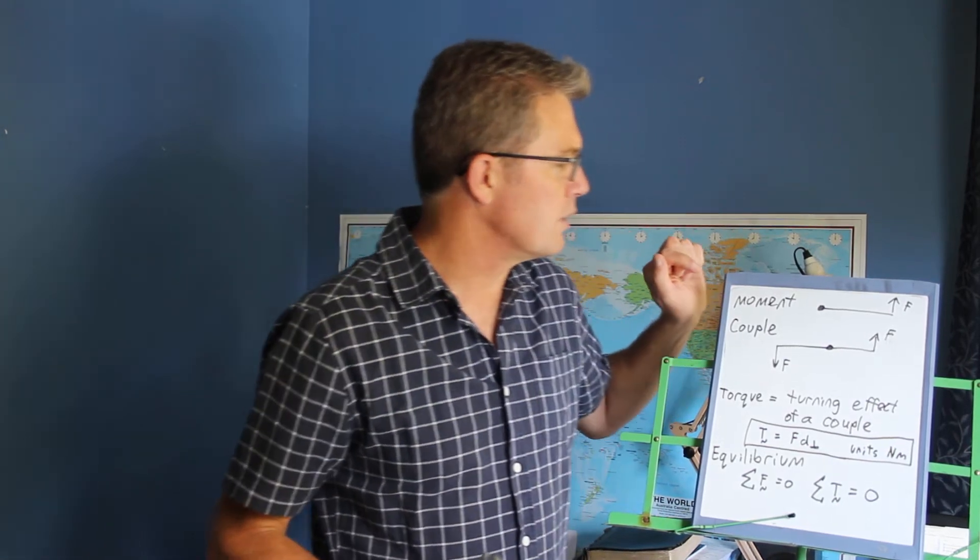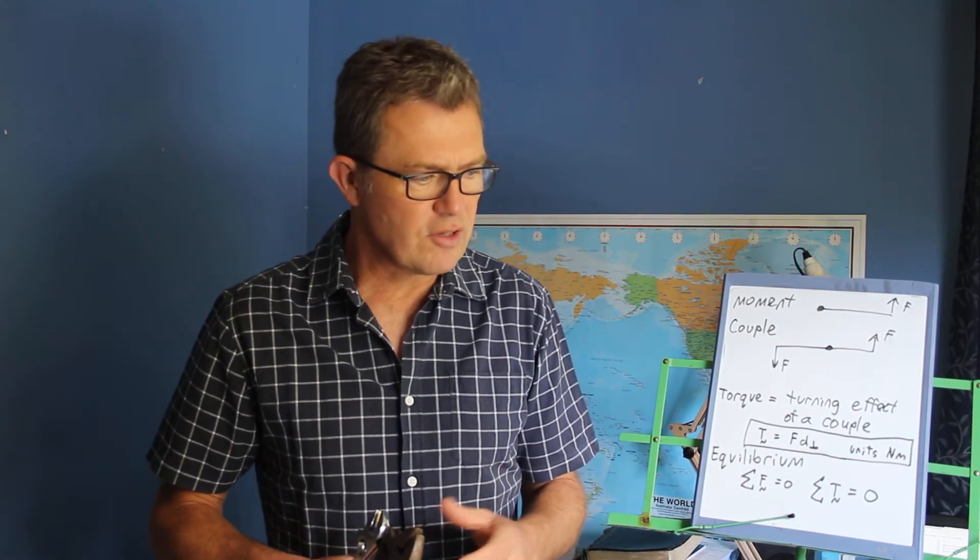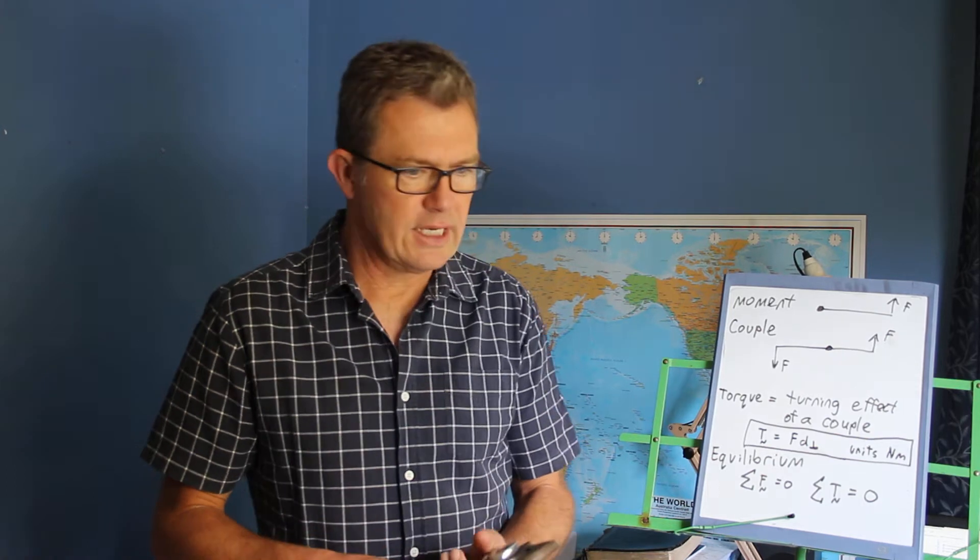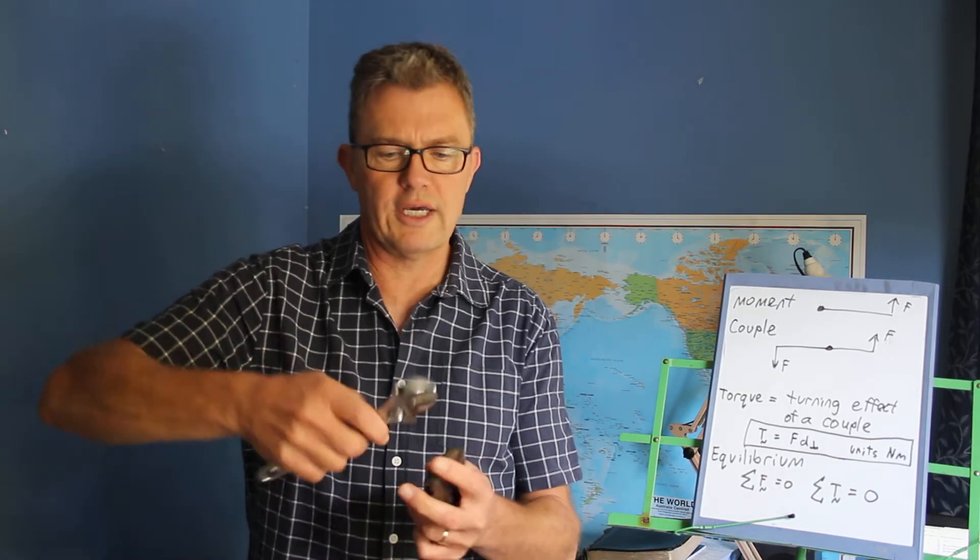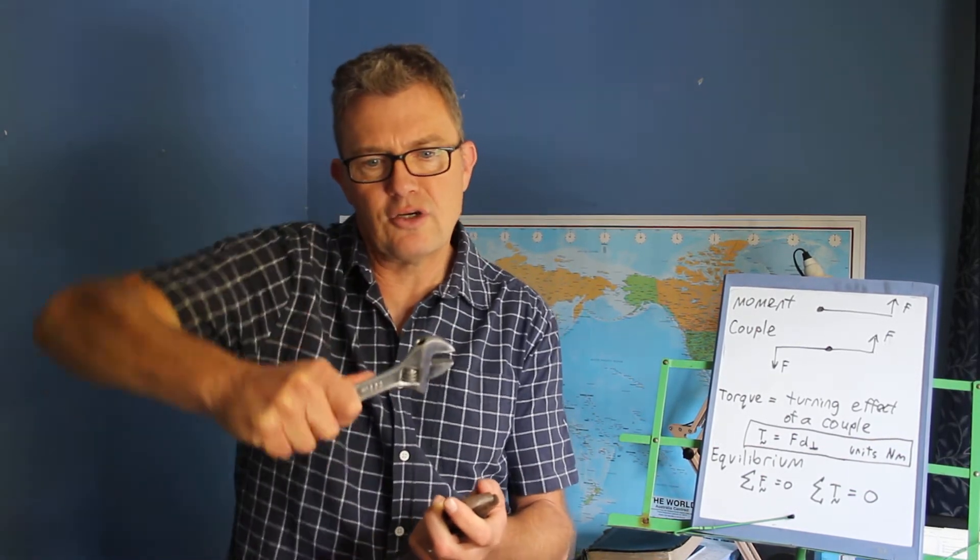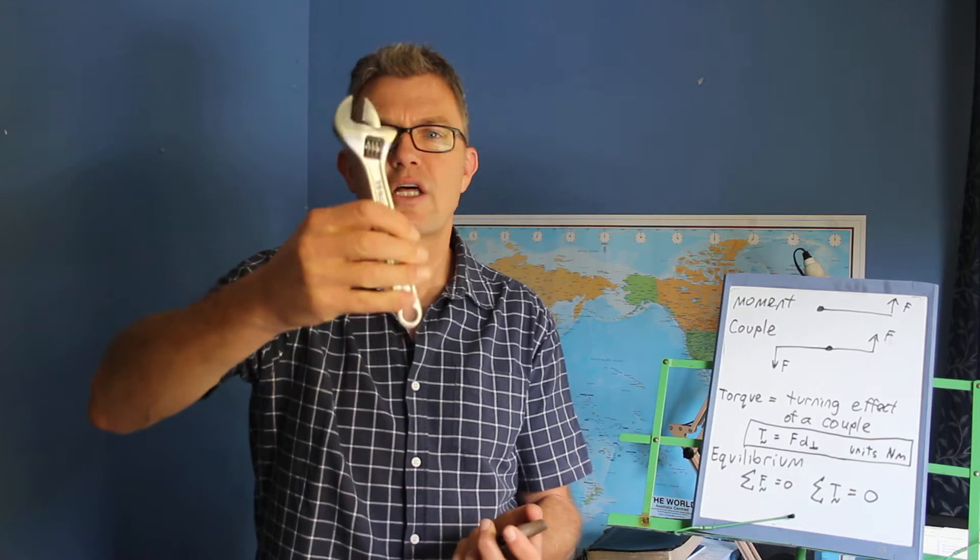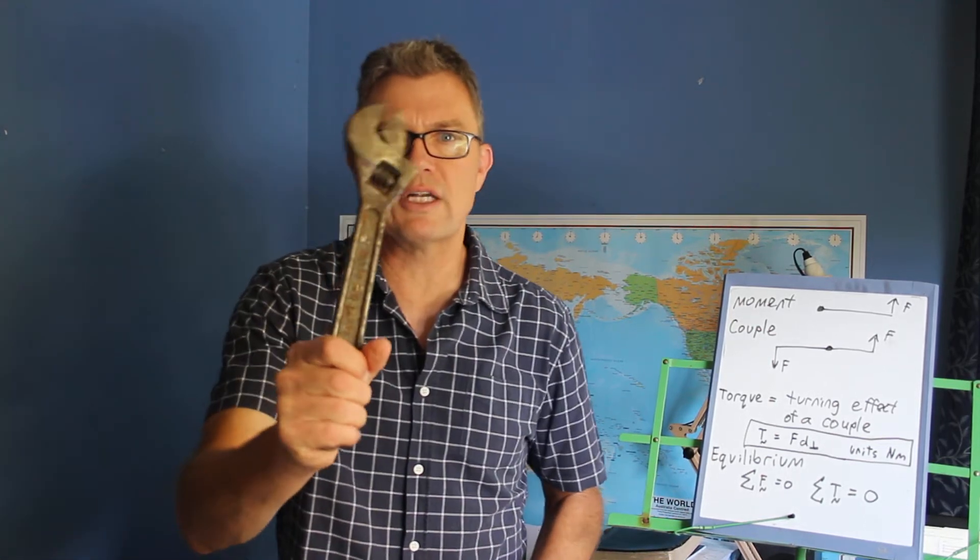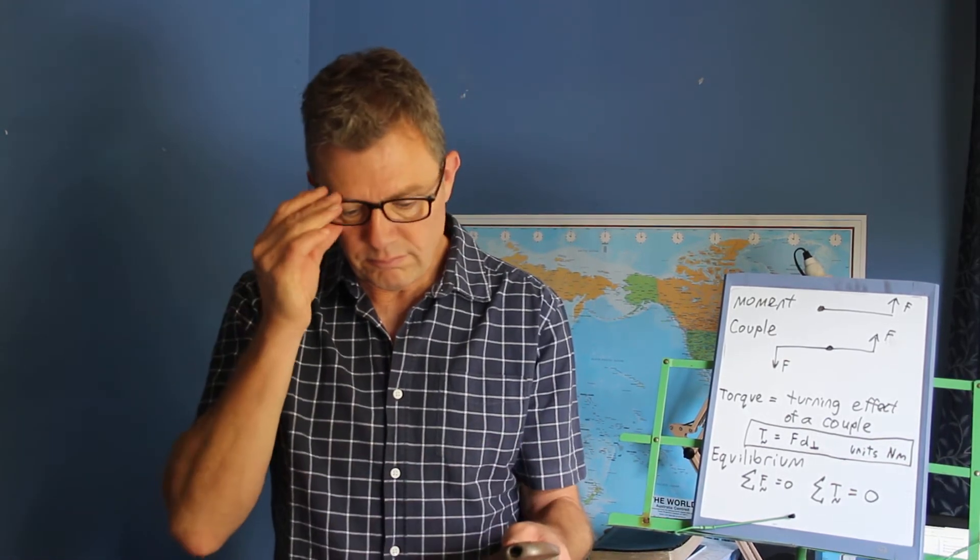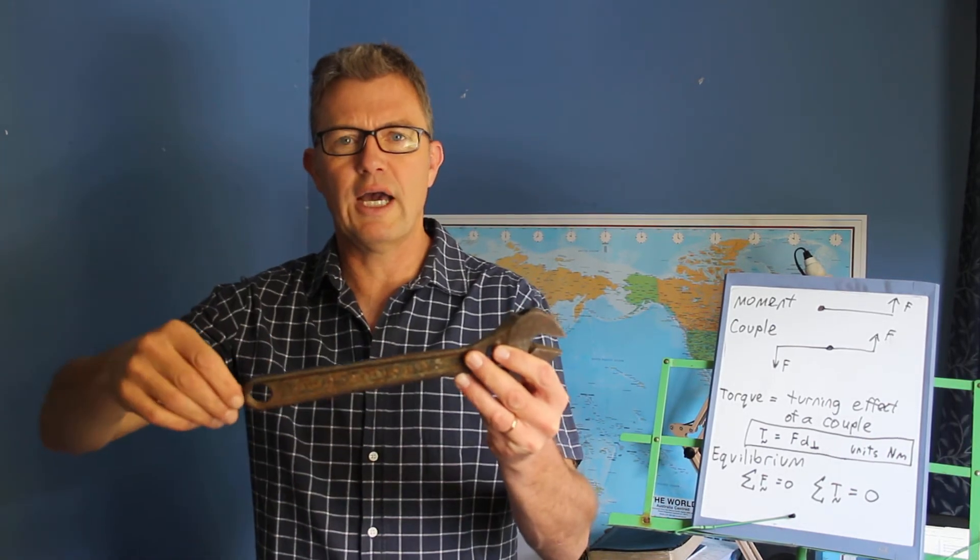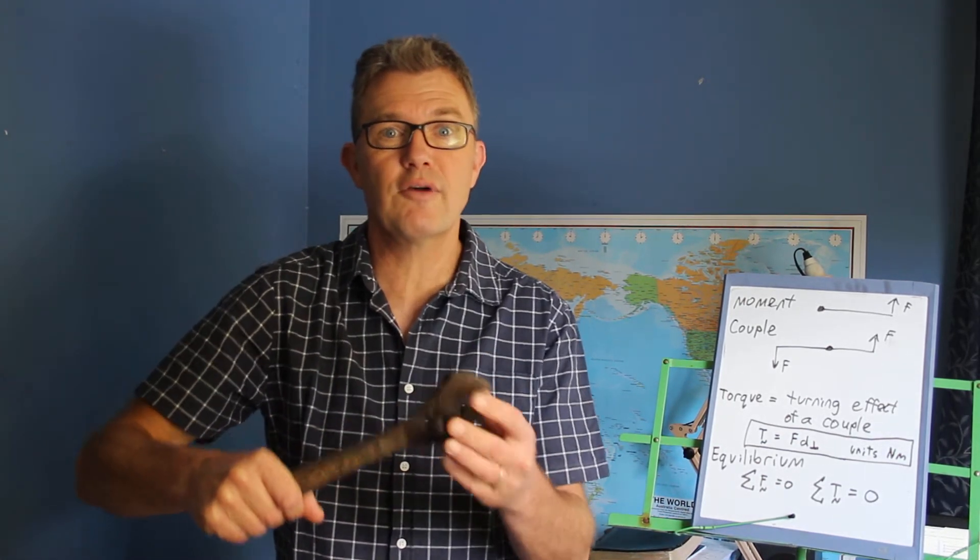So first of all, what is a moment? A moment is the turning effect that a force has. If I apply a force to a nut, I'm trying to undo a nut. I try it with my fingers and I can't get it undone. So I get a smaller spanner and I put it around the nut and I turn it. If it's too hard to turn, then I ditch the little puny spanner and I get a big grunter of a spanner and I put that around the nut and then I might be able to turn it. What's the difference? The main difference is this one has a longer arm. I apply the same force with my arm but it has a greater turning effect.